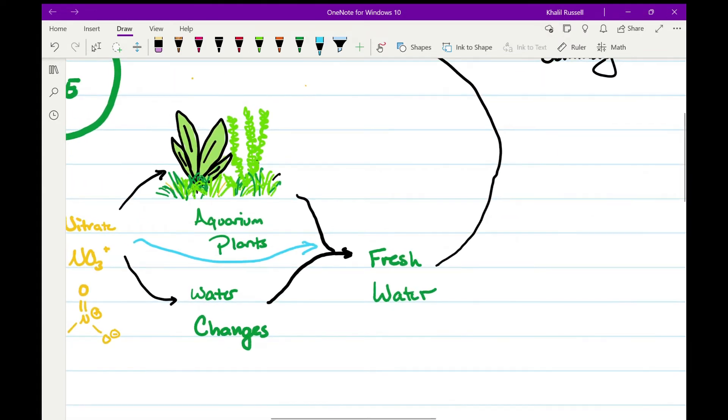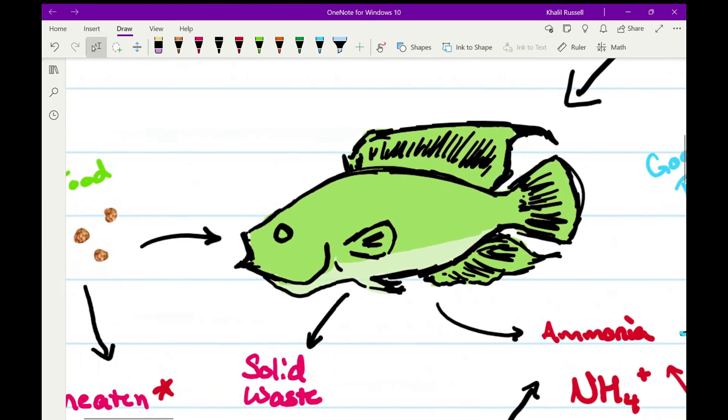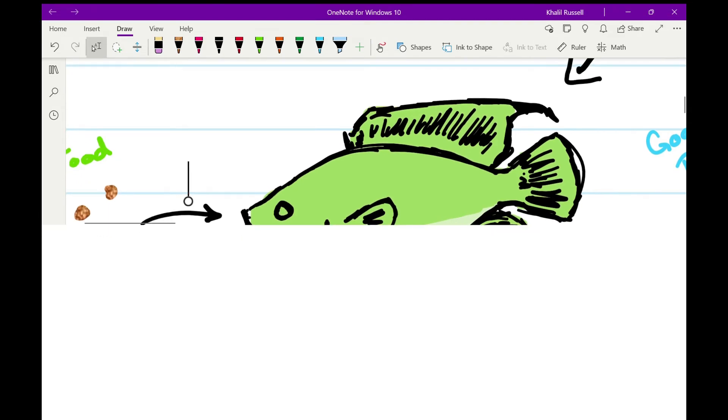But whatever path you go through, you end up going from nitrates to fresh water, which is obviously green, obviously good. And then the fresh water gets consumed by the fish. The fish produces waste into that fresh water, makes it dirty, and the whole cycle continues and repeats ad infinitum. It's a really beautiful process.